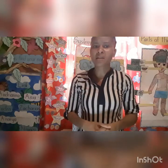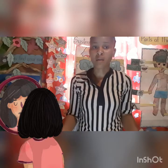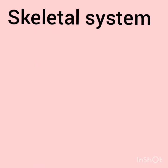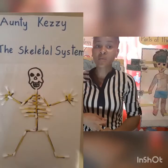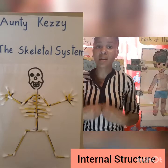Picture number one — what part of the body are you seeing on the screen? The external part of the body. And what does external mean? Outer structure — it's what we see when we stand in front of a mirror. Let's look at picture number two. What are you seeing in this picture, boys and girls? Our skeleton. Can you see your skeleton when standing in front of a mirror? No. What special machine allows us to see our skeleton? An X-ray machine. This is what our body looks like on the inside — it's our internal structure.